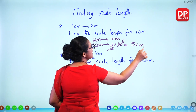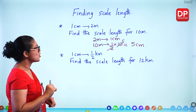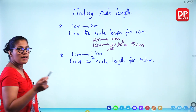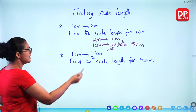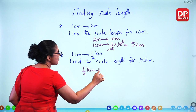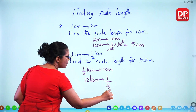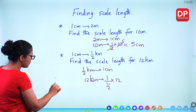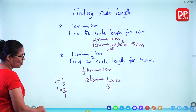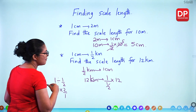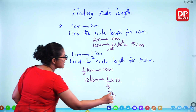Another example: 1 cm represents half a kilometre. Find the scale length for 12 kilometres. Rewrite: half a kilometre represents 1 centimetre. For 12 kilometres: 1 divided by half, multiplied by 12. One divided by half equals 2 (take the reciprocal), so 2 times 12 gives 24 centimetres to represent 12 kilometres.